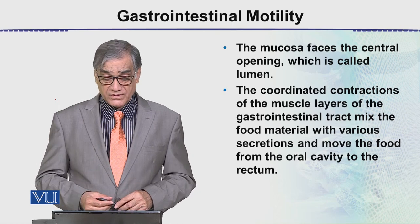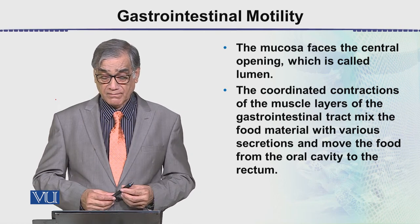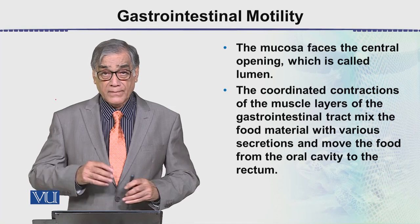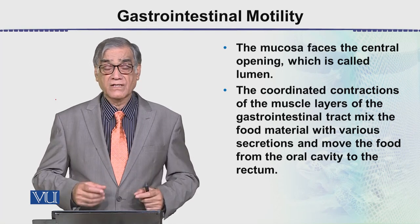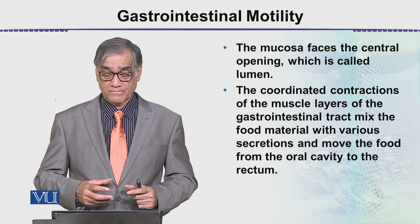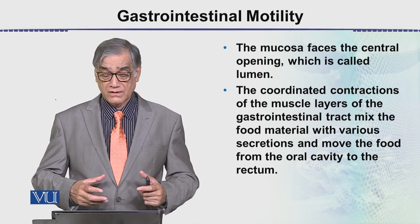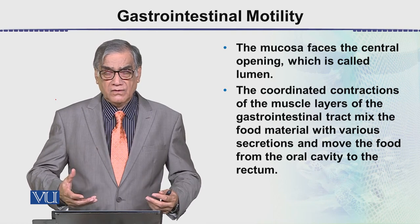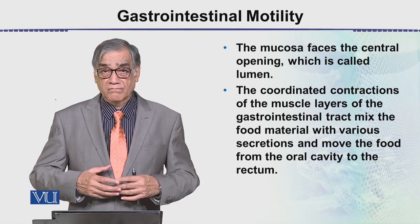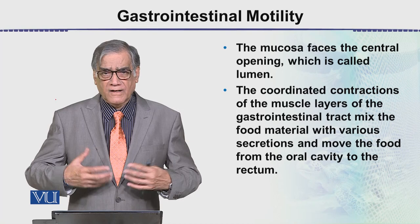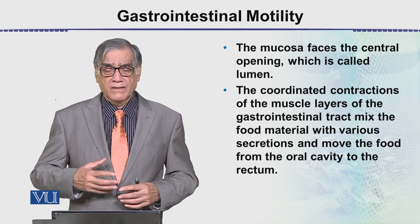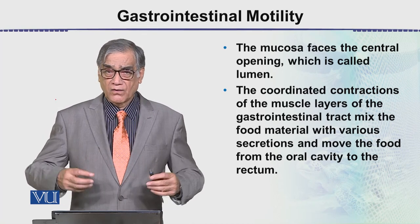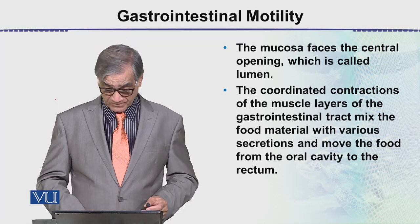The coordinated contractions of the muscle layers of the gastrointestinal tract mix the food material with various secretions. These secretions can be mucus, enzymes, and so on. These mix with the food, and then the digestion of the food takes place.